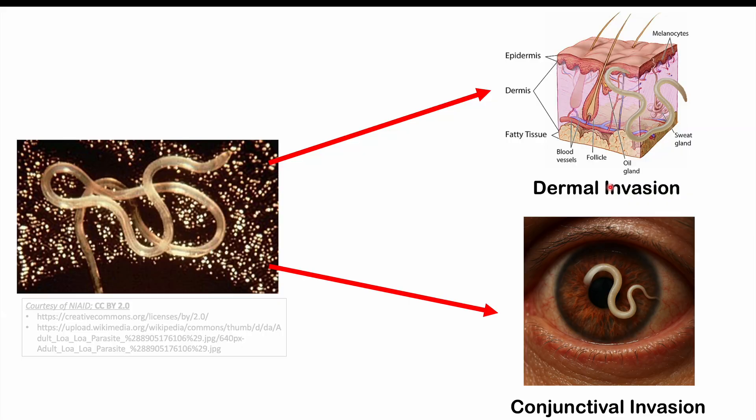Some of the main issues include dermal invasion — the worm can enter into the skin, often in loose connective tissues in the subcutaneous layers, and also into the conjunctiva of the eye. However, many patients can be asymptomatic; they can have these worms in the skin producing tens of thousands of larval worms and have no symptoms at all.